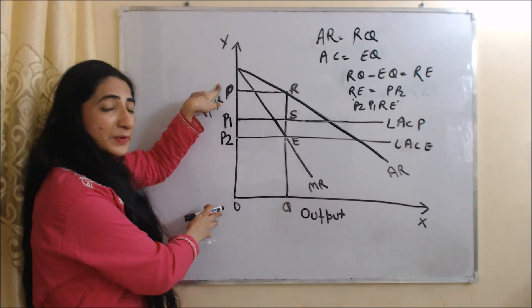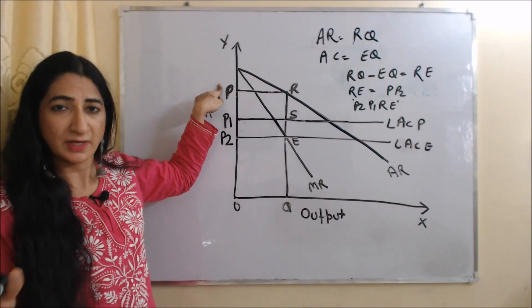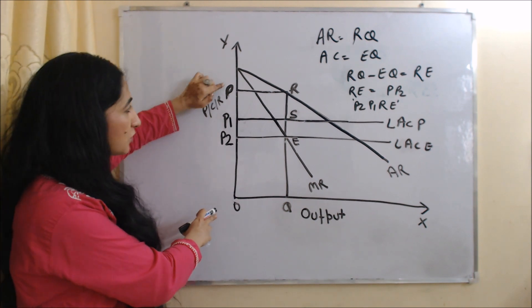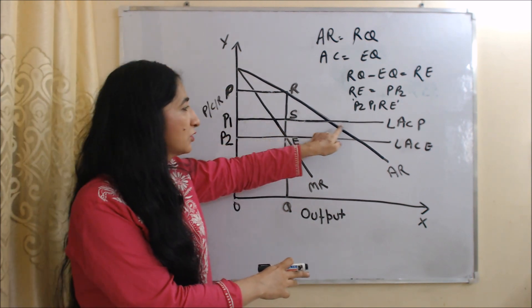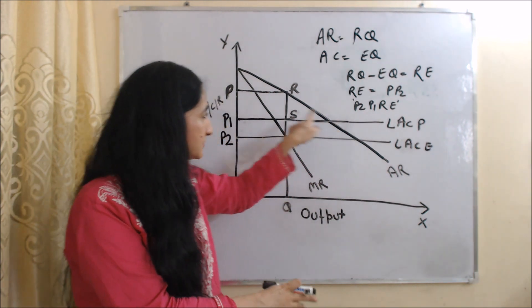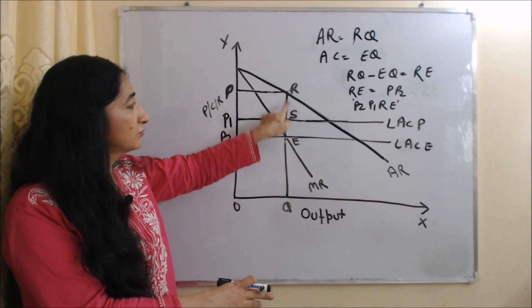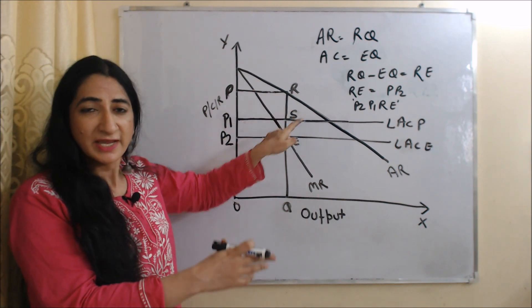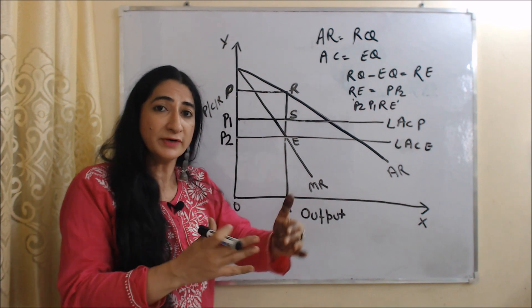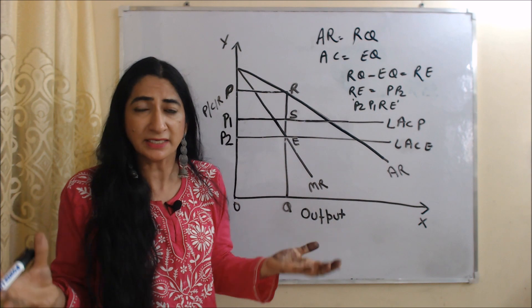No doubt, at OP price existing firms are earning more profit, but still they are not going to charge OP price, because OP price is above the cost of new firms. OP price is above the cost of new firms, so if price is more than cost, new firms can earn profit if they enter the market, and that is why they will think to enter the market.